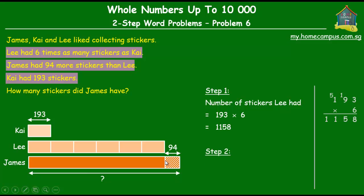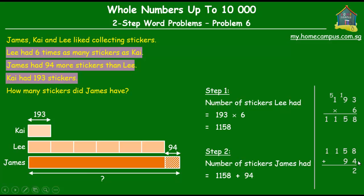We add another 94 to that and that will give us the total number of stickers that James had. So 1158 plus 94 is equal to: 8 plus 4 is 12, put the 2 and carry the 1. 5 plus 9 is 14 plus the carried 1 is 15, put the 5 and carry the 1. 1 plus 1 is 2, then bring the final 1000 down. So 1158 plus 94 is equal to 1252, and that's the number of stickers that James had.